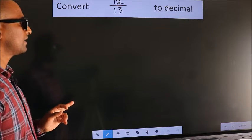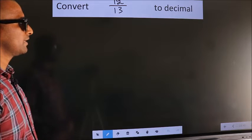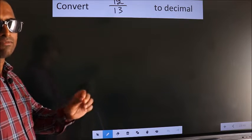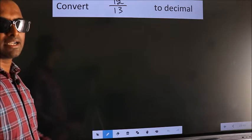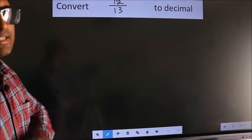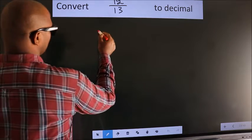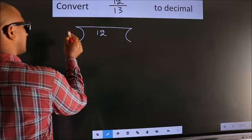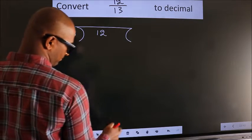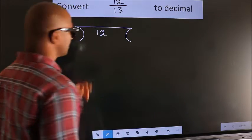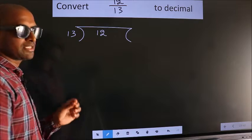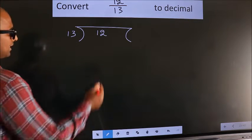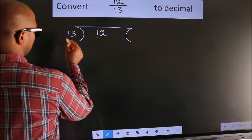Convert 12 by 13 to decimal. To convert this to decimal, we have to divide. And to divide, we should frame it in this way. 12 here, 13 here. This is your step 1. Next, here we have 12, here 13.